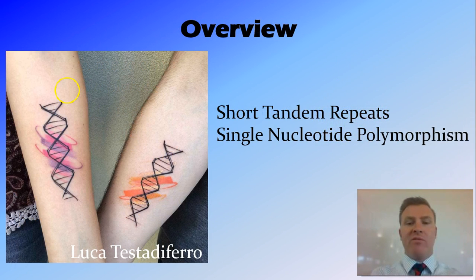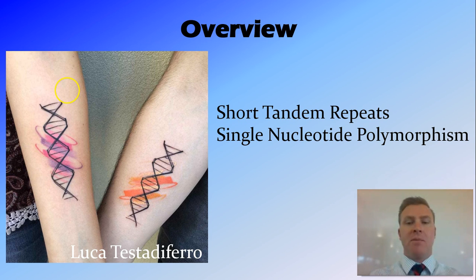In this video we've looked at short tandem repeats — sections of non-coding DNA that repeat a number of times — using statistical analysis to determine how closely people are related, and we've looked at single nucleotide polymorphisms or SNPs, where a single nucleotide changes. Thanks for watching guys. Peace out.